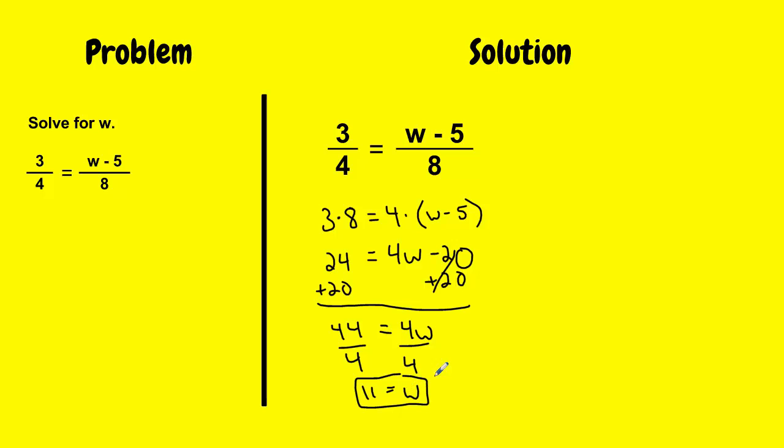So how do I know this is the correct answer? Well, what I would do is substitute it into my original equation. So I have 3 over 4 equals, and in place of w, I'm going to switch it out with what I got for an answer, 11 minus 5 over 8. And I get 3 over 4 equals 11 minus 5 is 6 over 8. And if I check my work, 3 times 8 equals 4 times 6. So I get 24 equals 24. It checks out. Therefore, I know w equals 11 is the correct solution to this proportion.